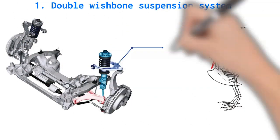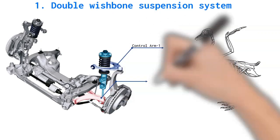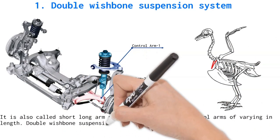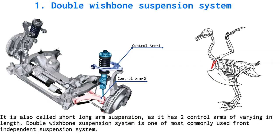Sometimes double wishbone suspension system is also called short long arm suspension, as it has two control arms of varying length. This is one of the most common types of front axle independent suspension system. Independent front axle suspension refers to a type of suspension system in which front wheels of a vehicle move independently.